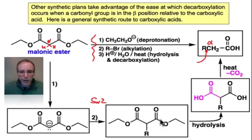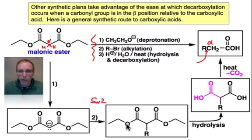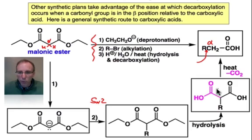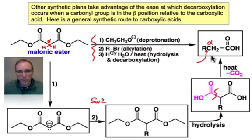This 1,3-diester undergoes hydrolysis, and so in the presence of acid and water, we can transform those ethyl esters into carboxylic acids. They're 1,3-dicarboxylic acids, and so just like the β-keto ester, they're quite prone to decarboxylation. Loss of CO2 by warming produces the α-alkylated carboxylic acid.